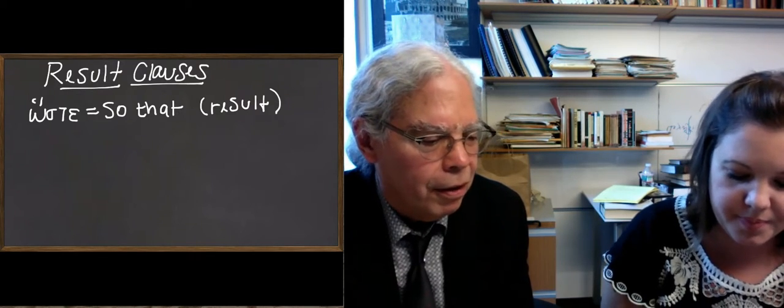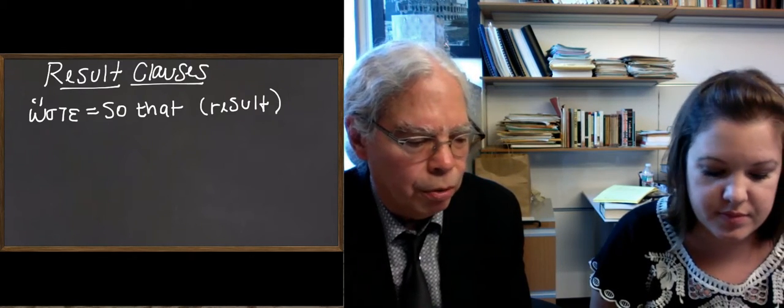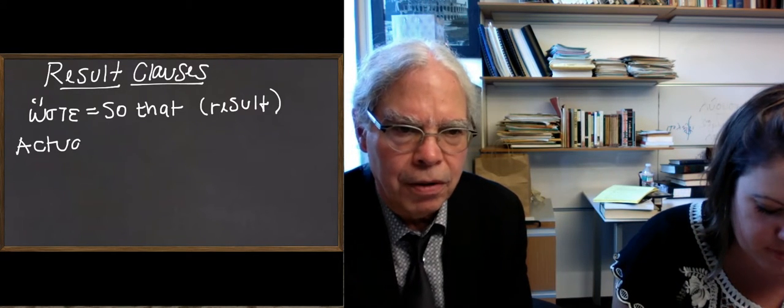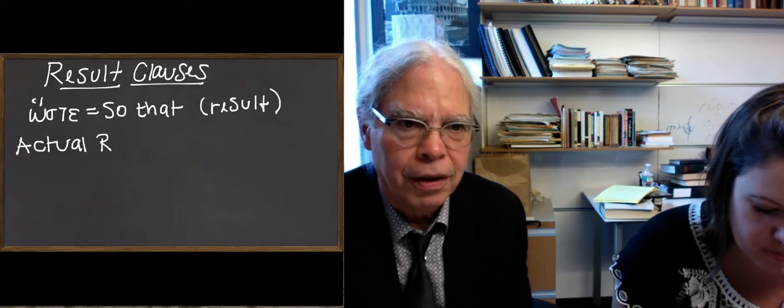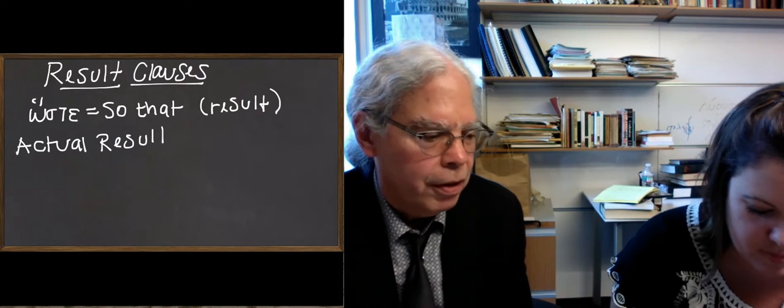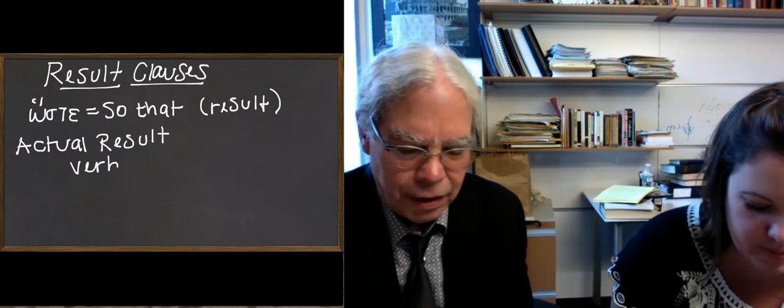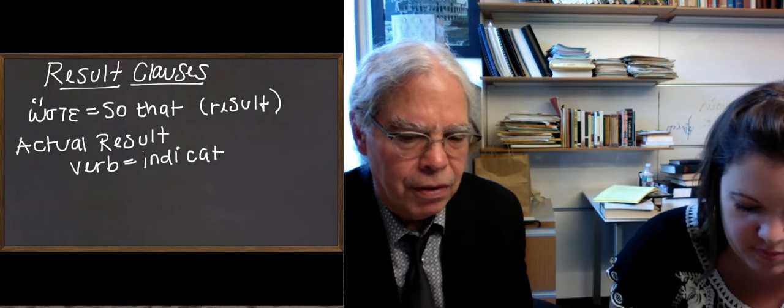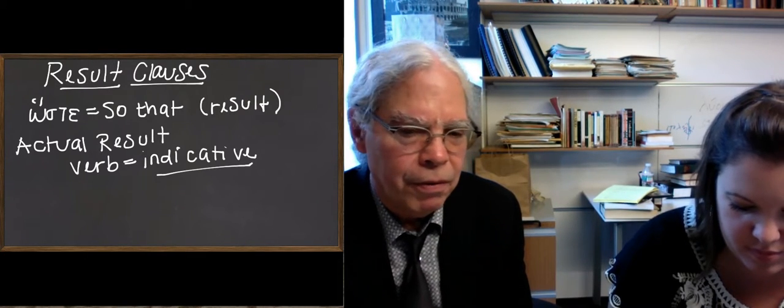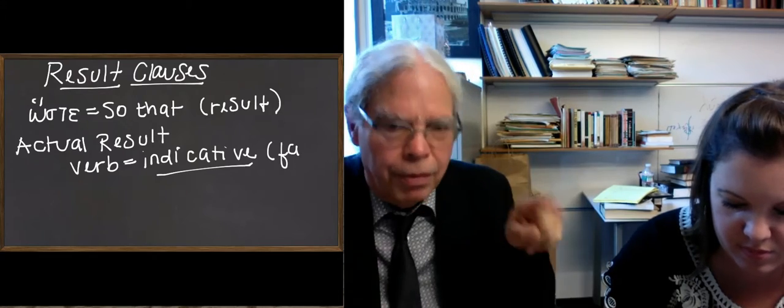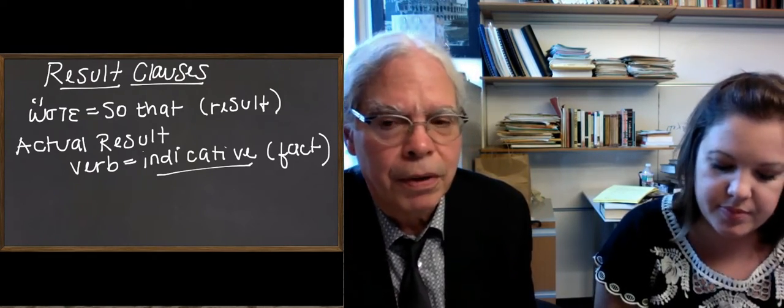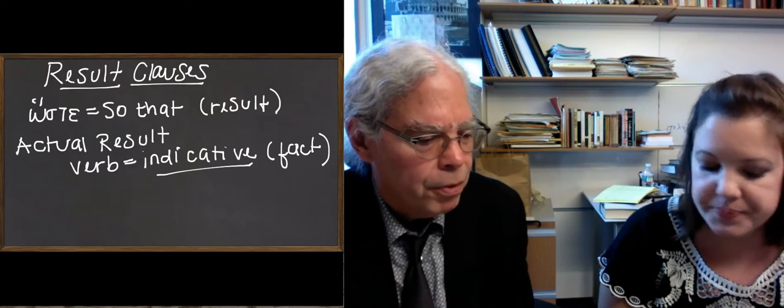So when it's an actual result, all you do is you put the verb in the result clause in the indicative. Because you're talking about a fact, a thing that actually happened. And that's what the indicative is. Remember we talked about this after every verb in the indicative. You can put in parentheses, this is true. So indicative is a way of talking about things that are really true.